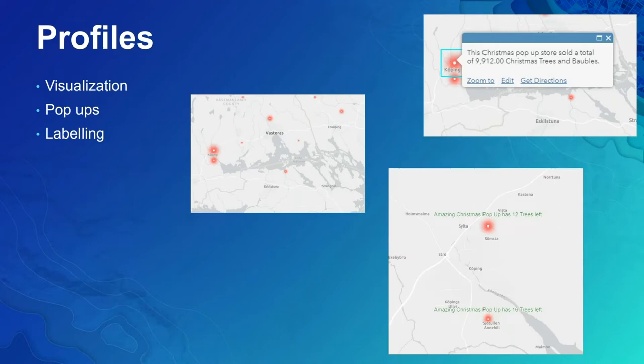Arcade may also be used for label expressions. These can be used in feature layers but also in scene layers when labeling 3D features. In this example, I've taken the name of the store and added the important information of how many Christmas trees are left in stock. In 3D scene views, we can also use Arcade for calculating the elevation of a feature — I'm going to show you a great example of this a little later on.